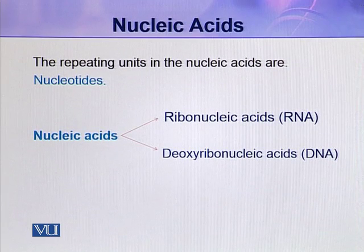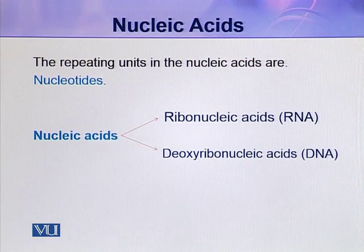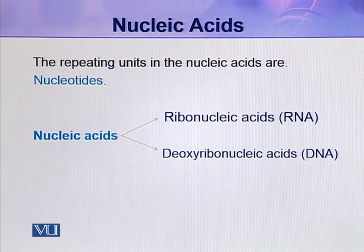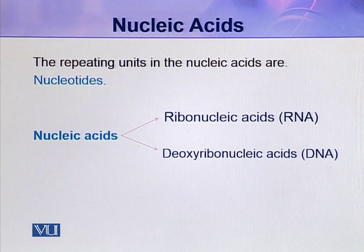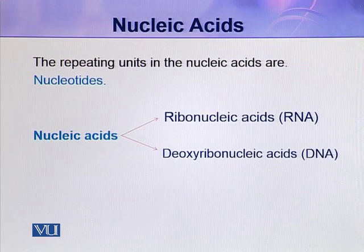Similarly, the nucleotide sequence of mRNA is dictated by the nucleotide sequence of DNA. A segment of DNA which is responsible for the synthesis or production of a functional product — either mRNA or a protein — is called a gene. There are thousands of genes in an organism, so obviously the DNA molecule contains thousands of genes.